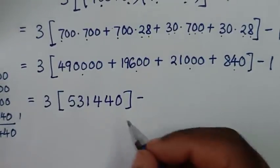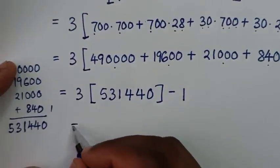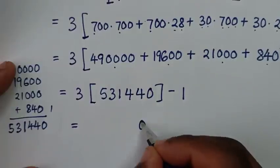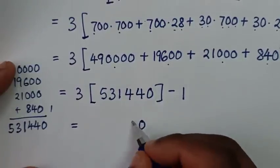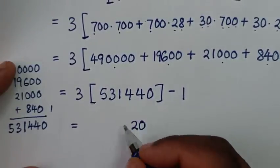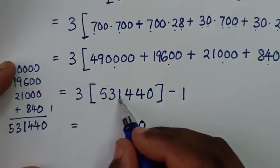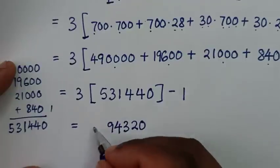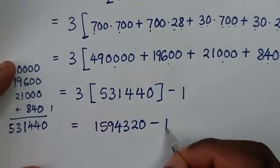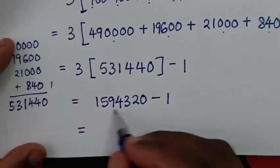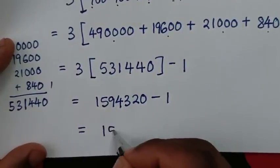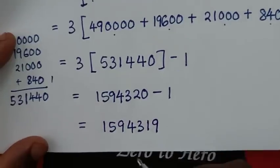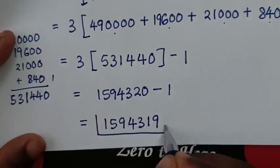Then bracket minus 1. So it will be equal to here: 3 times 531,440. Multiplying: 3 times 4 is 12, carry 1; 3 times 4 is 12 plus 1 is 13, carry 1; 3 times 1 is 3 plus 1 is 4; 3 times 3 is 9; 3 times 5 is 15. So 3 times 531,440 is 1,594,320. Then minus 1 gives us 1,594,319. Therefore this is our final answer.